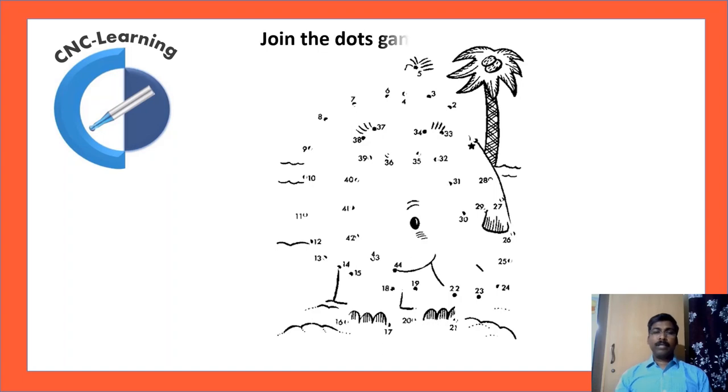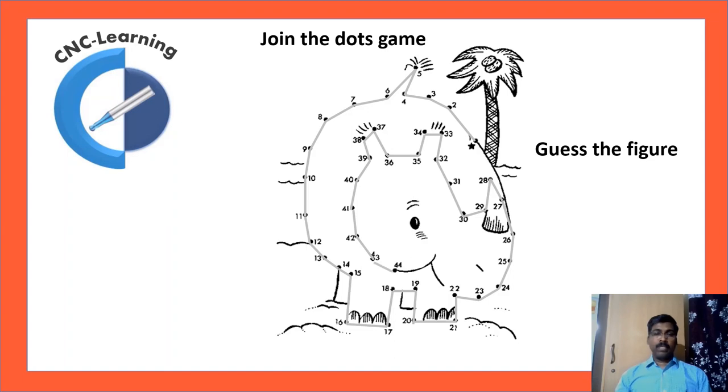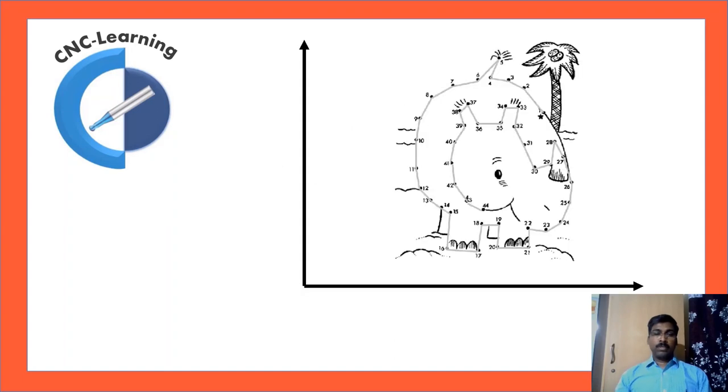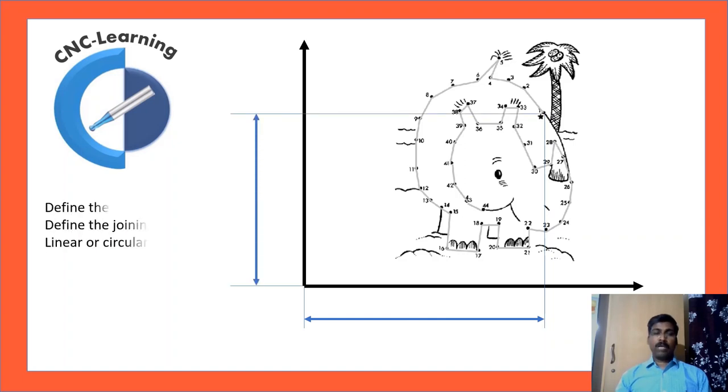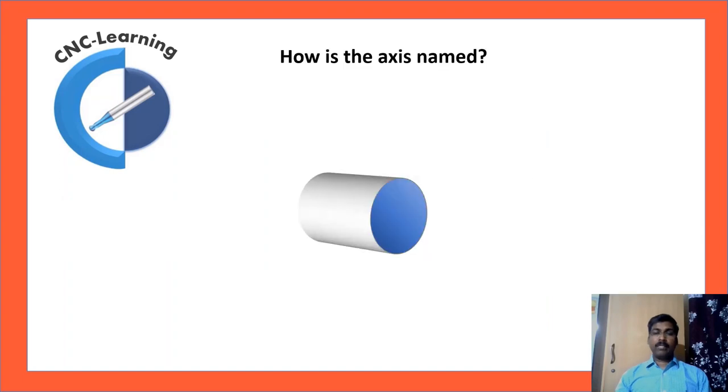What you are seeing on the screen is a game. Join the dots game. Just guess the figure. Now the dots are being joined by lines and you are able to see a beautiful picture. In CNC also, the programming is done almost in a similar fashion. The points are defined in terms of coordinates, horizontal and vertical. And how the points are to be connected, whether it is by linear interpolation or circular interpolation. That is how a CNC program is done.